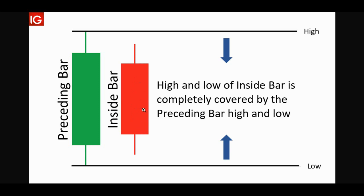To know whether a candle or bar is inside, you have to look at the previous or preceding bar or candle. If the high of that period — the top of the upper wick — is lower than the preceding top of the upper wick, and the bottom of the lower wick is higher than the bottom of the preceding lower wick, then it's an inside bar. In other words, if the high and the low of the bar is completely covered — engulfed — by the preceding candle, then it's an inside bar.